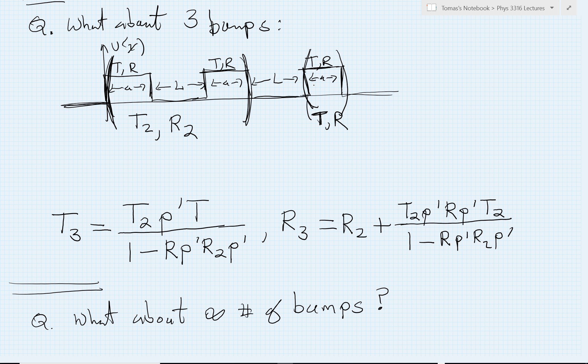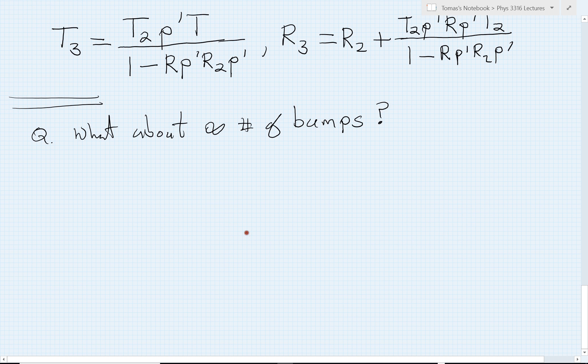So here's the idea. Well, we just learned something, right? We just learned we can go from two bumps to three bumps. So certainly we should be able to do this type of thing iteratively. So the first idea is we can go from, the idea then is going to be in two phases.